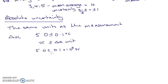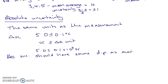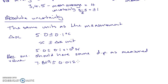We always want to end up with an absolute uncertainty. The guidance from AQA says that the absolute uncertainty should have the same number of decimal places as the measured value. So if I've got a value like 7.819 plus or minus, I need the same number of decimal places — for example, 0.012 metres. Three decimal places in the value, three decimal places in the uncertainty. You always need to have units afterwards unless you've got a dimensionless quantity.